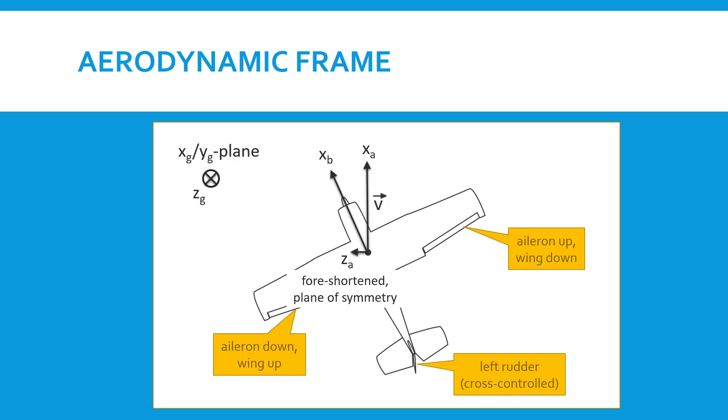And again, just as in the other two examples, we need to have Y be in the direction that gives us a right-hand coordinate system. So that also is foreshortened.